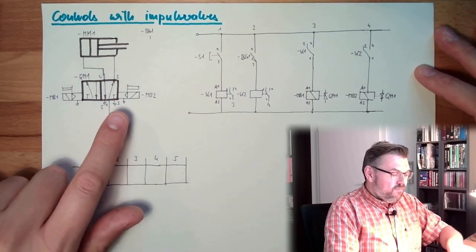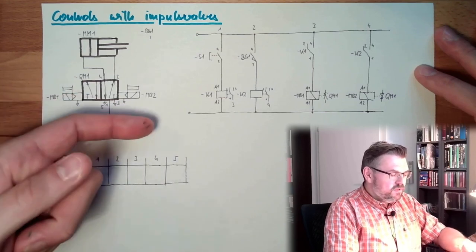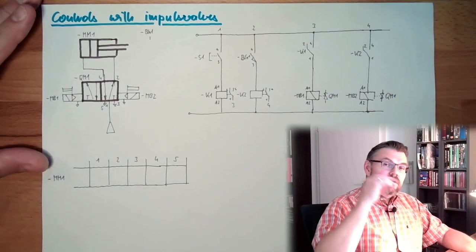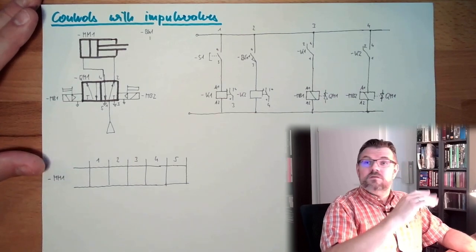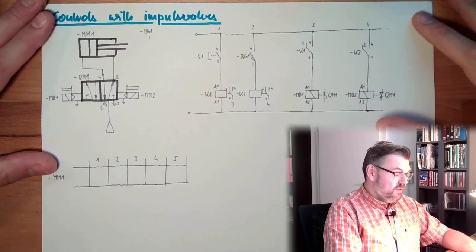If we have an impulse here, it will move to this direction. If we have an impulse here, we move to this direction. The impulse can end after the switch, does not really matter. So this has storing capabilities, this valve here.